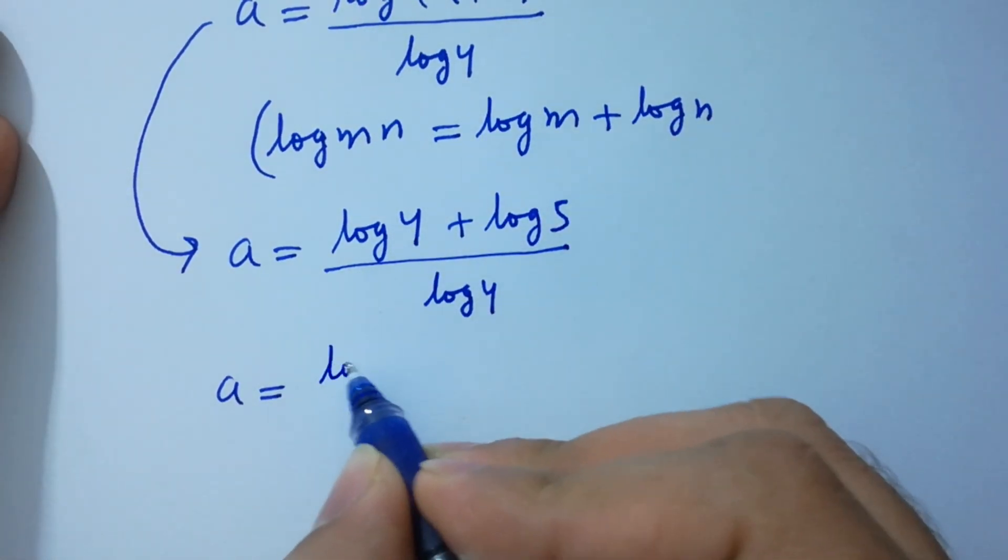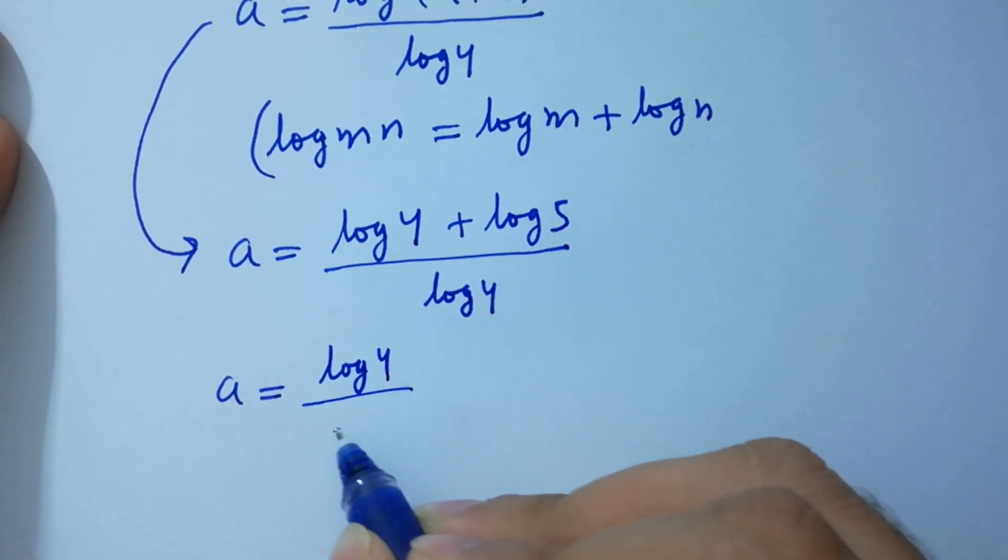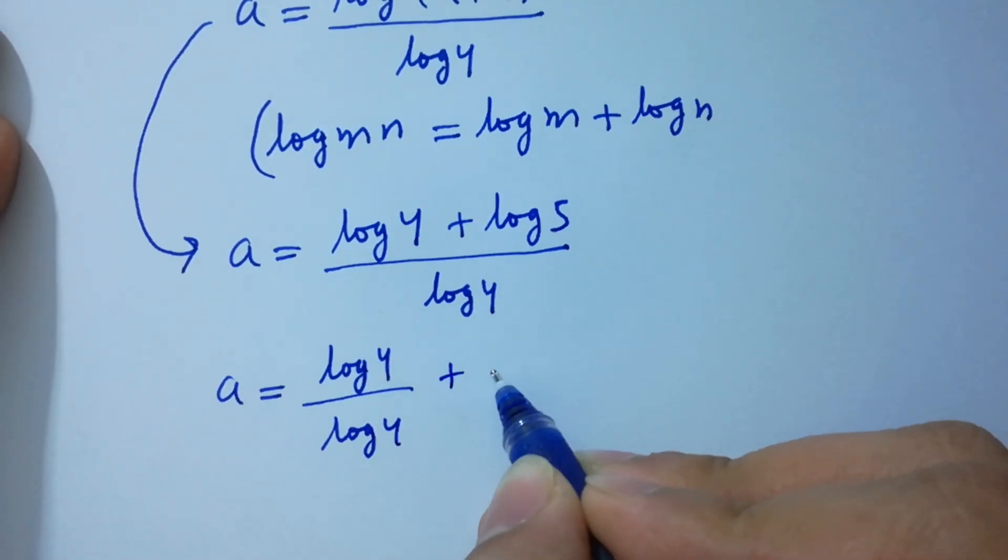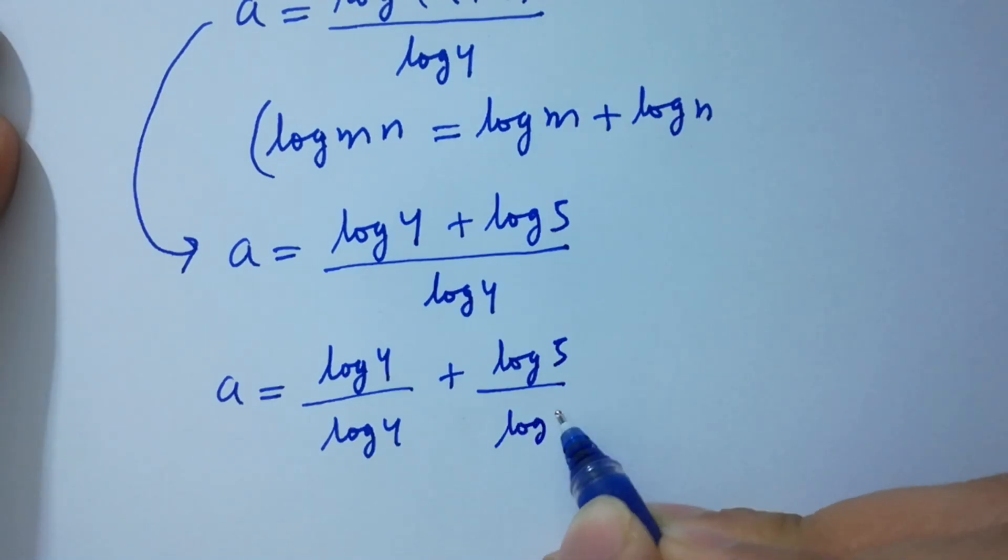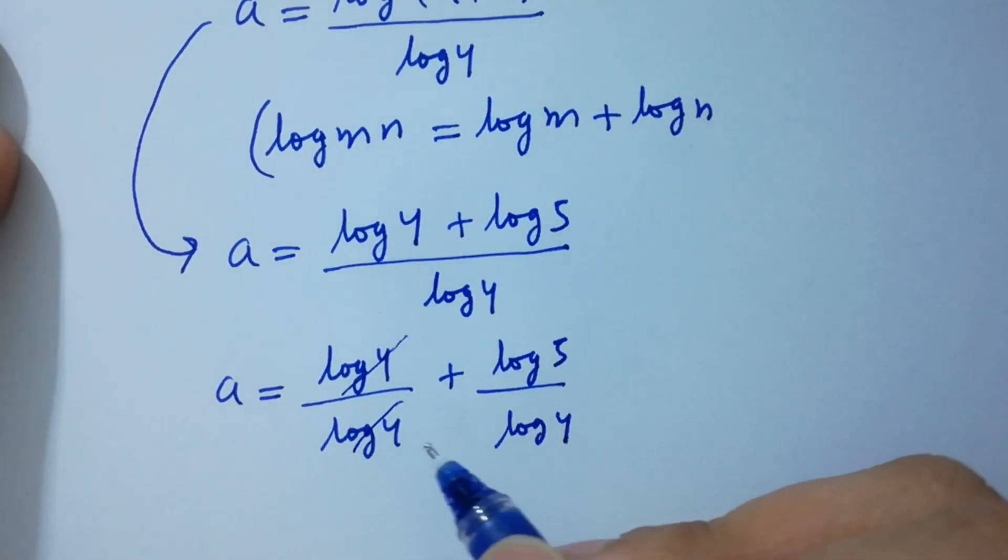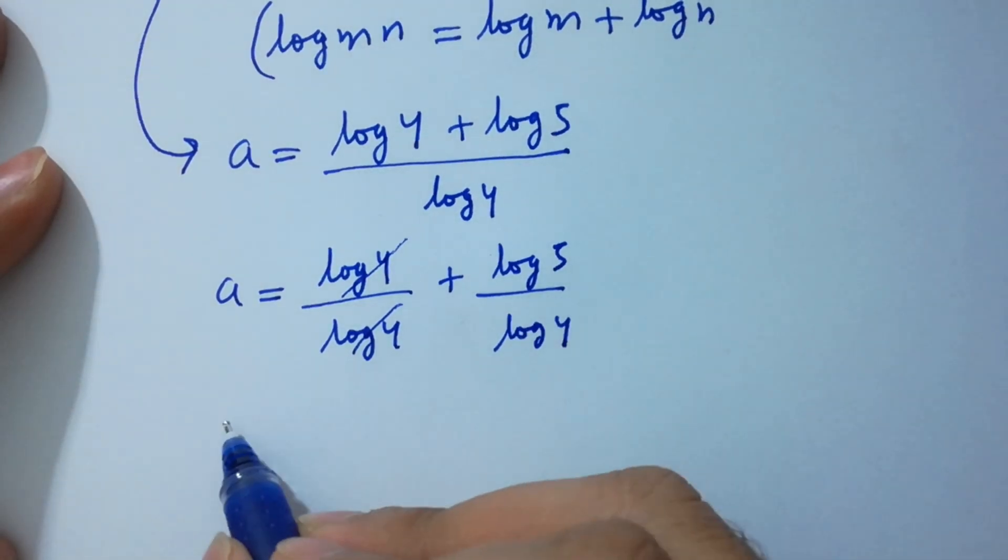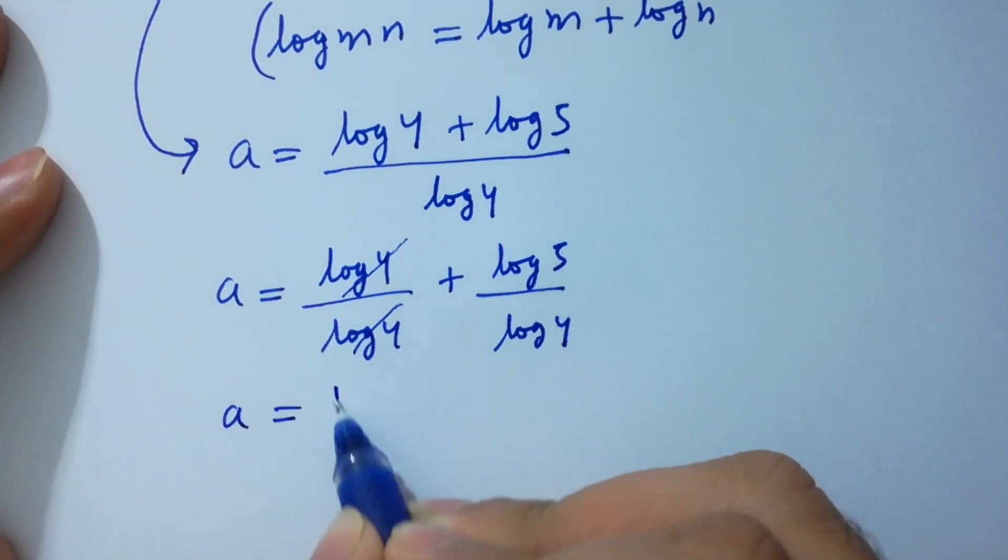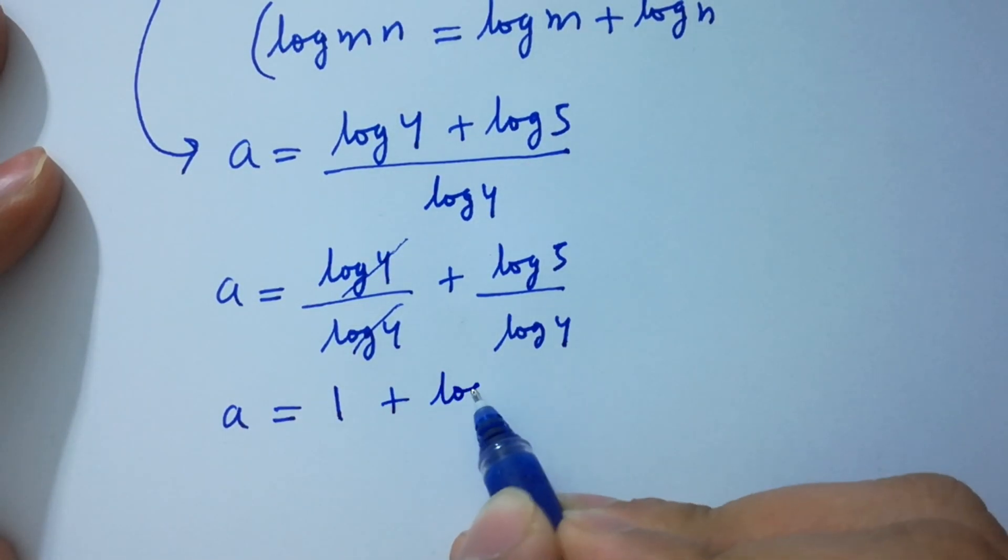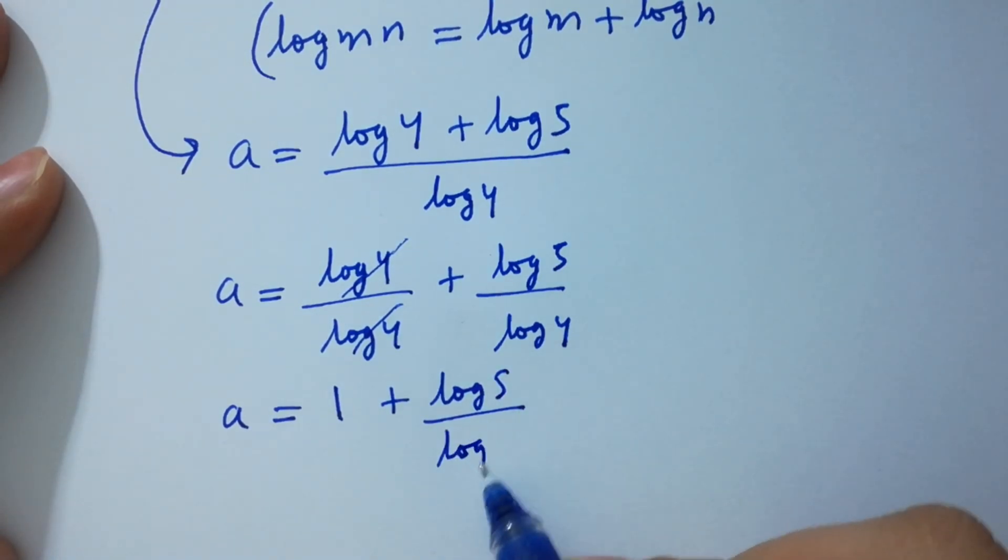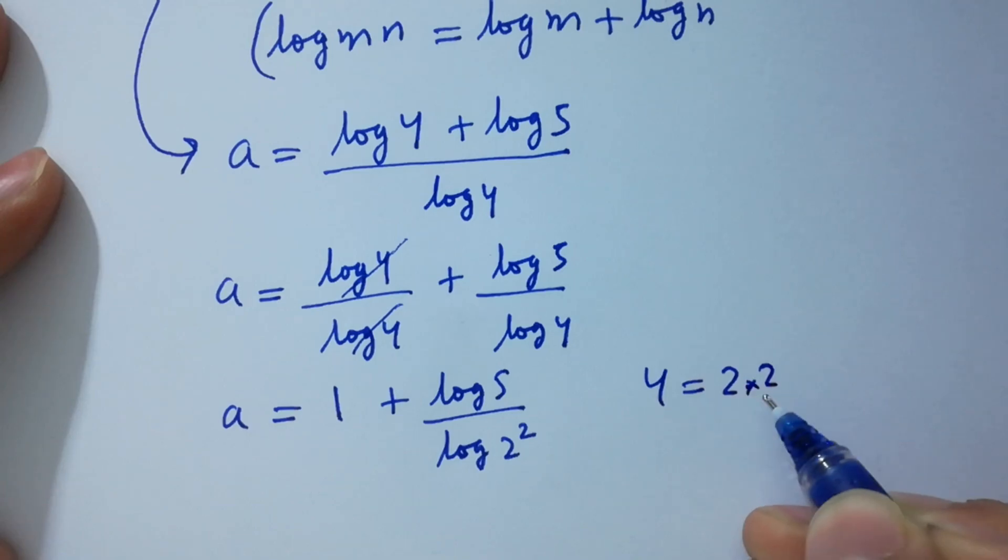Log 4 and log 4 cancels. A equals 1 plus log 5 over log 2 squared, as 4 equals 2 times 2 which is equal to 2 squared.